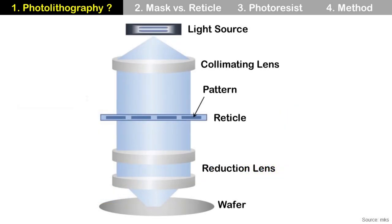This is one example of a simplified system configuration of photolithography. The light source is located on top, which provides light. This light goes through a collimating lens, a reticle with a pattern, a reduction lens, and finally arrives on the wafer.